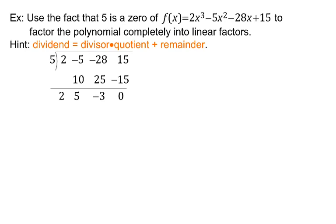Use the fact that 5 is a zero to factor the polynomial completely into linear factors. We're going to take a close look at the synthetic division that we just did. This idea that the dividend equals the divisor times the quotient plus the remainder.